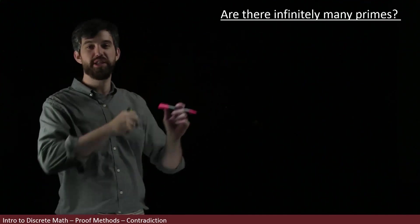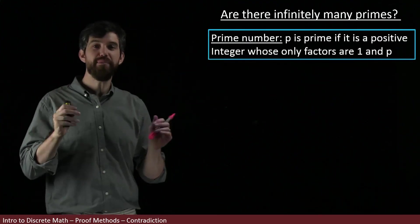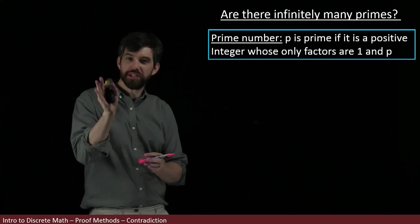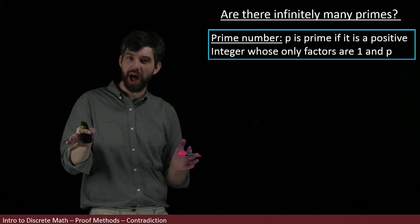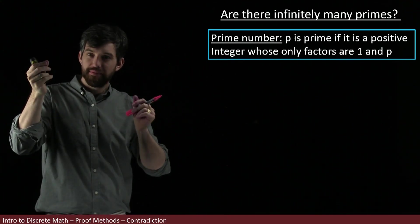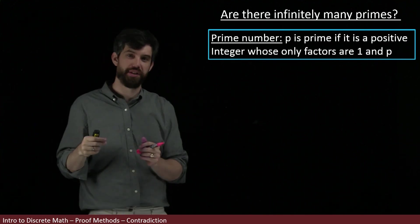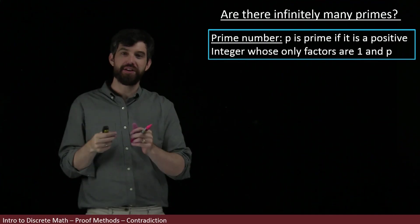Before we jump into the proof, let's remind ourselves about the terminology. A positive integer is called prime when it has two different factors, one and itself. For example, two has one and two as factors, and three has one and three as factors, and five has one and five as factors.